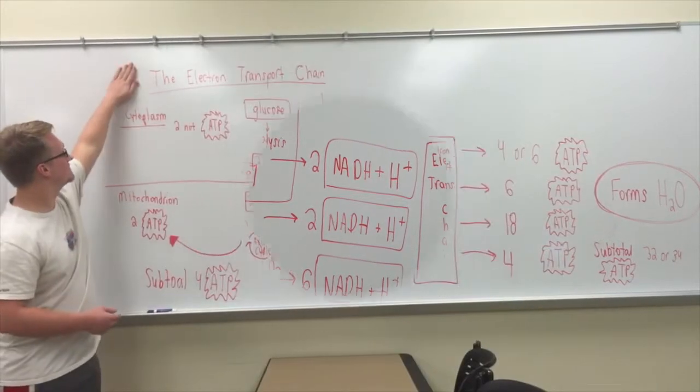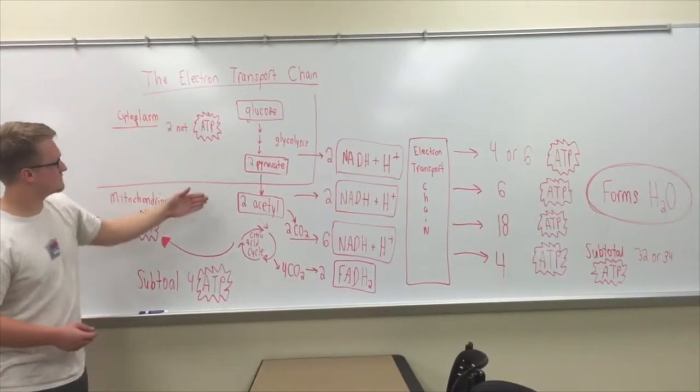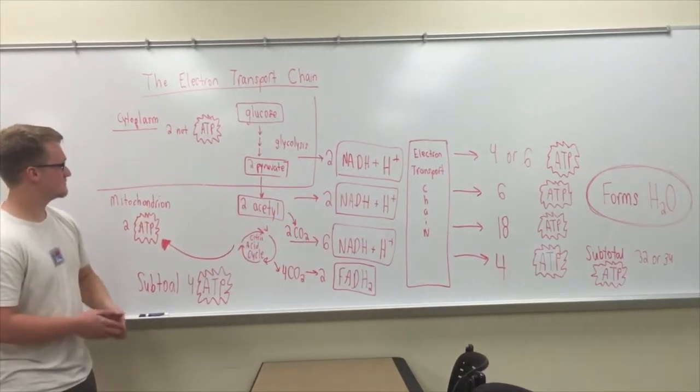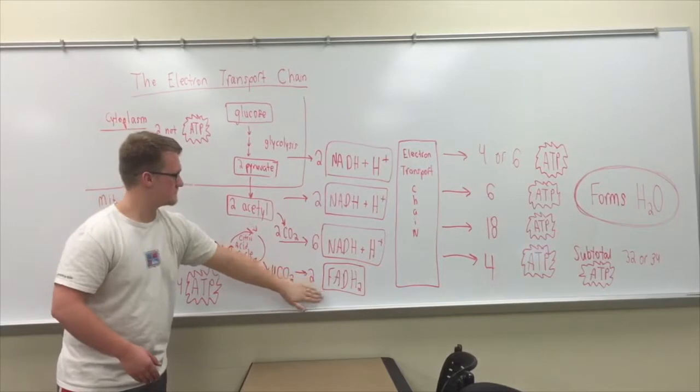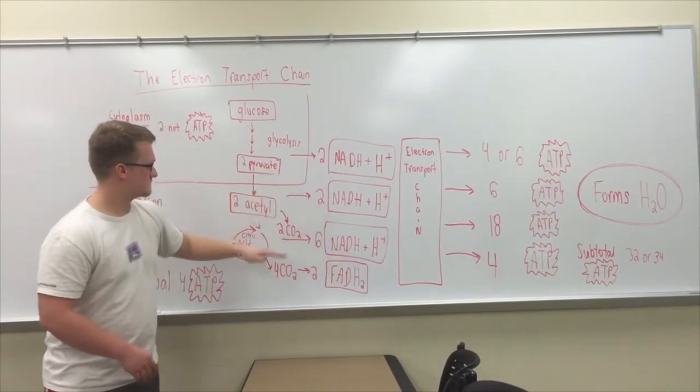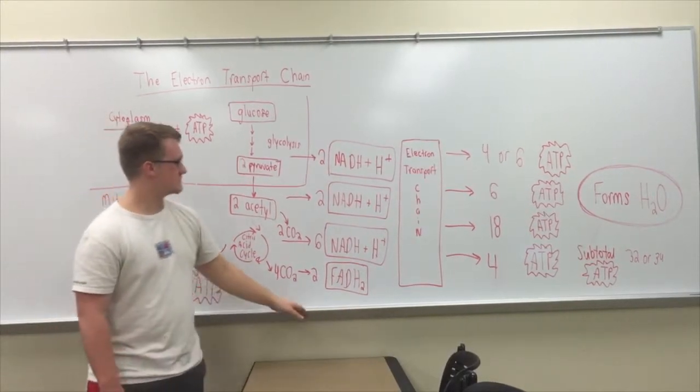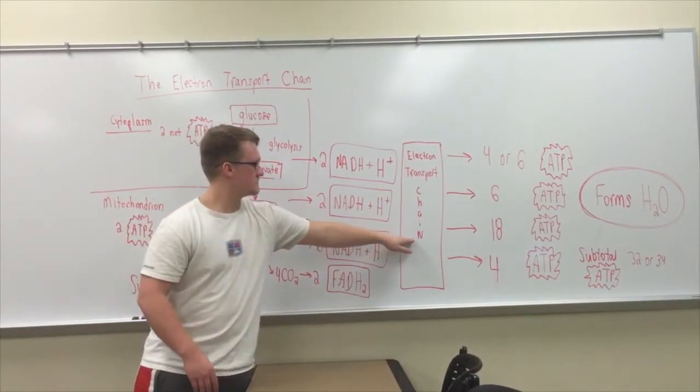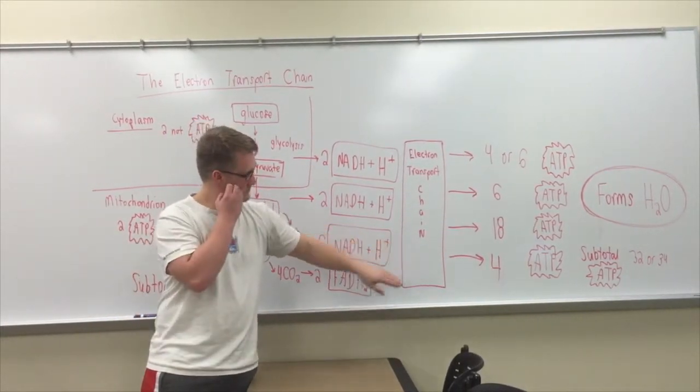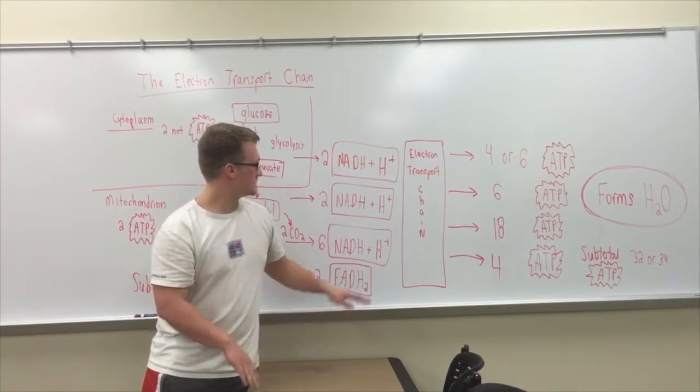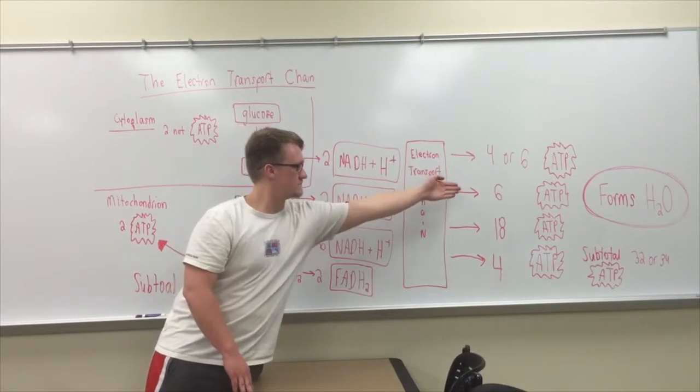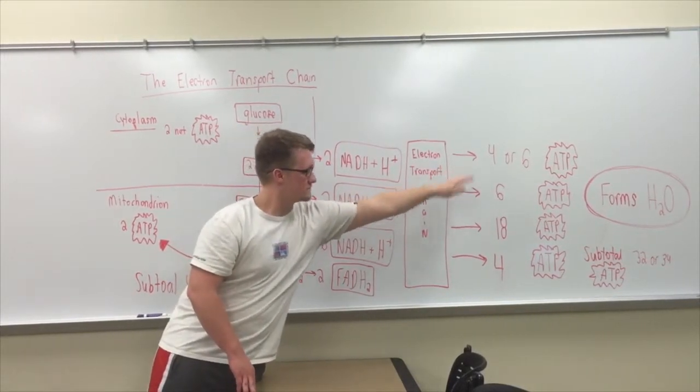The electron transport chain is a series of electron carriers in the cristae of the mitochondria. NADH and FADH2 give up electrons to the chain. Energy is released and captured as the electrons move from a higher energy to a lower energy state. ATP happens in a process called chemiosmosis phosphorylation, which is when ATP synthase combines ADP and protons and moves it through the electron transport chain and turns it into ATP.